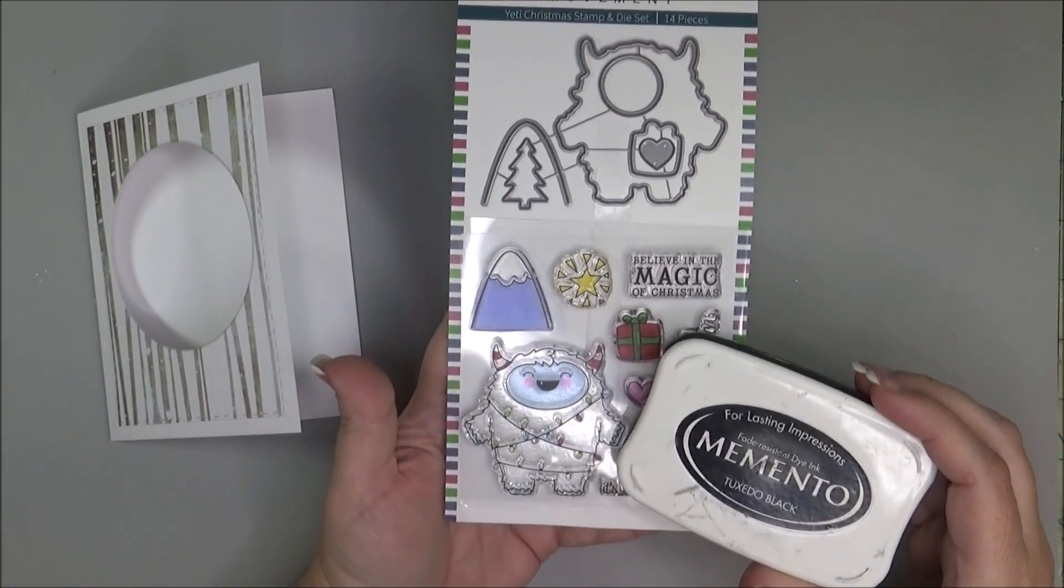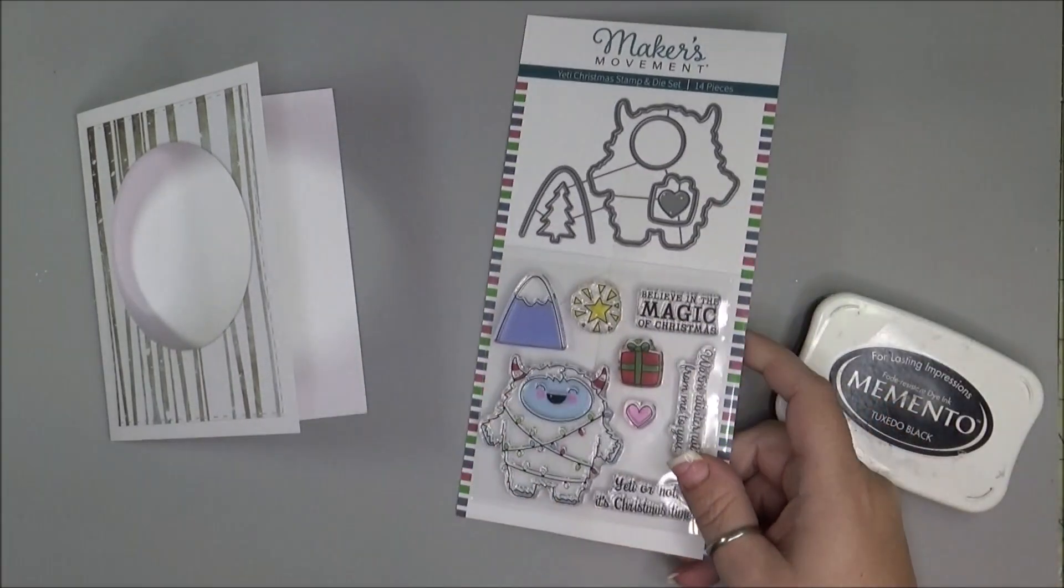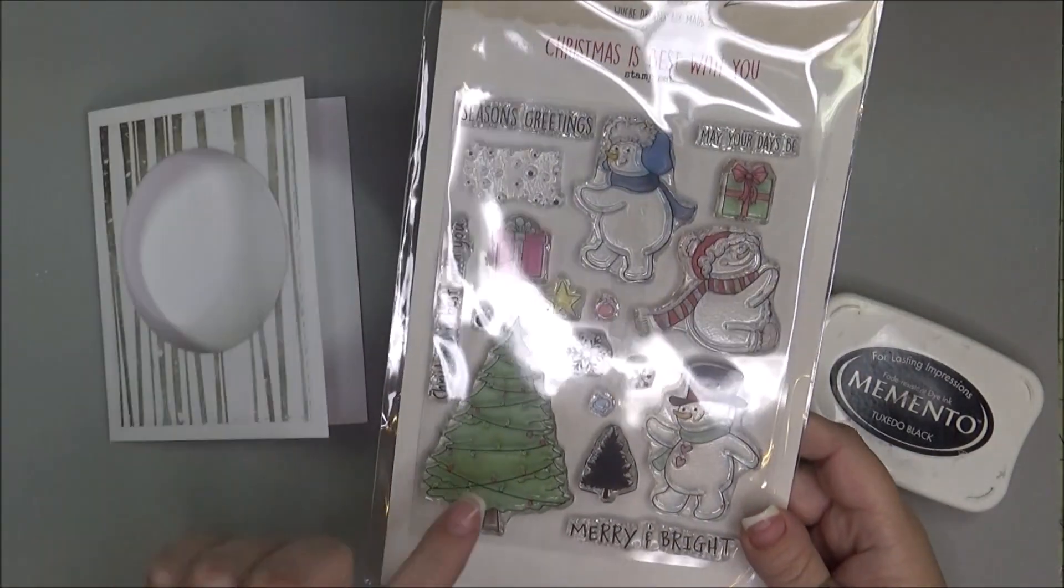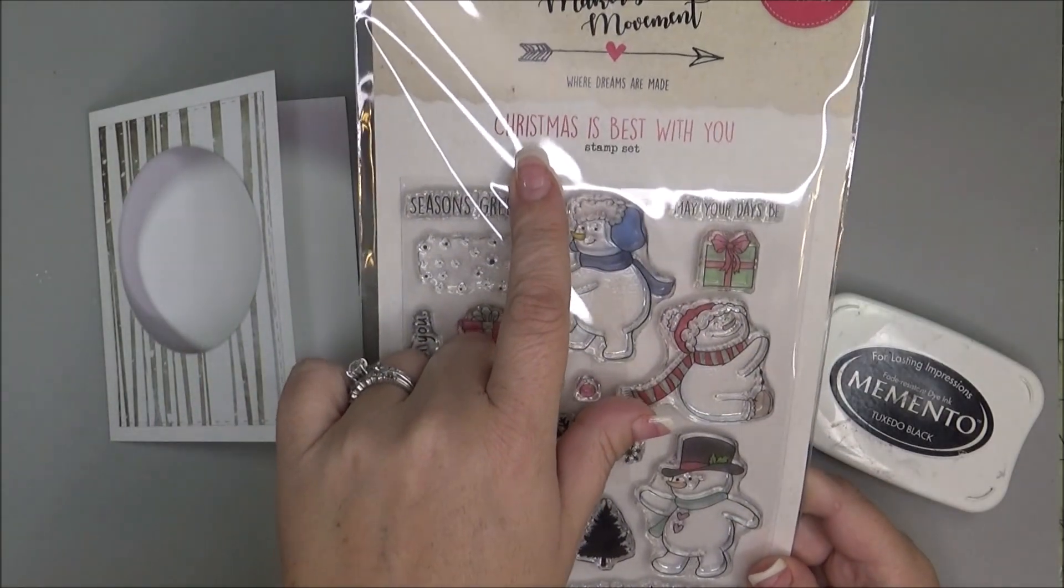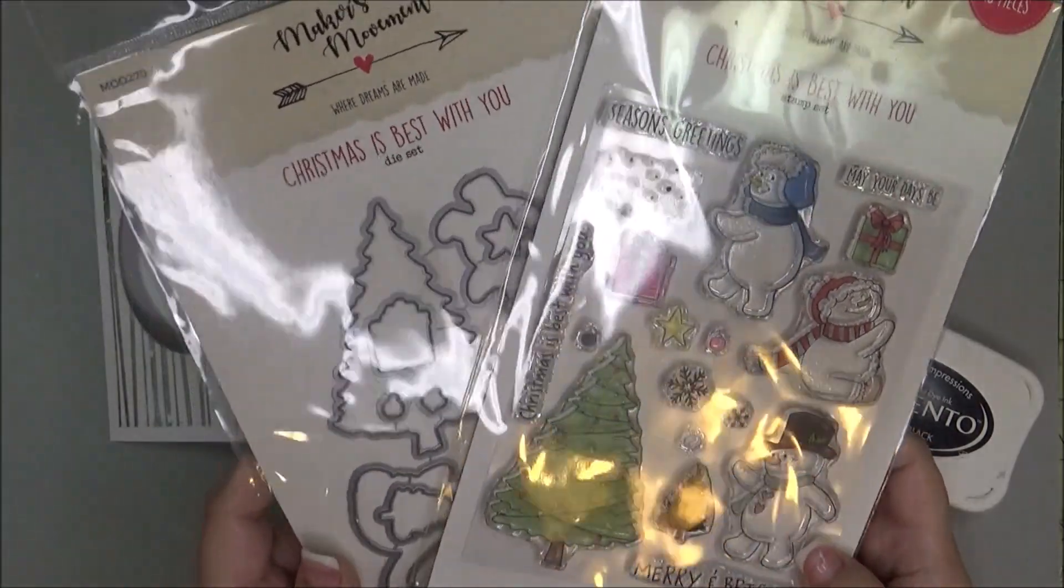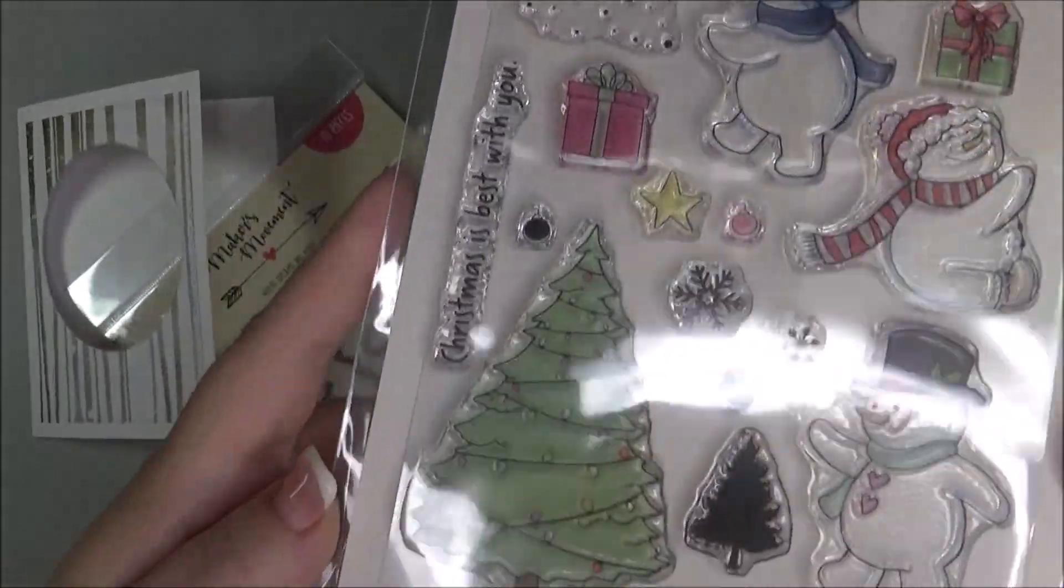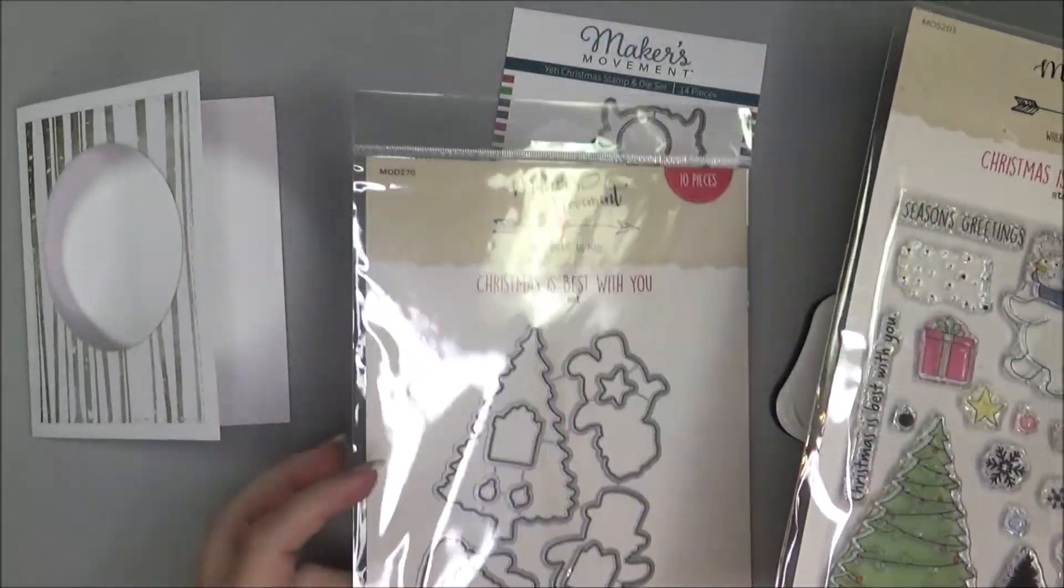I'm going to stamp him with some Memento Tuxedo Black and color him in with some Copic markers. And I also decided that I wanted to use this stamp set. I want to use this tree right here. It's Christmas is Best With You. It also has a matching die set. So I'm going to cut the tree out and color that in with Copic markers. And then die cut it out.